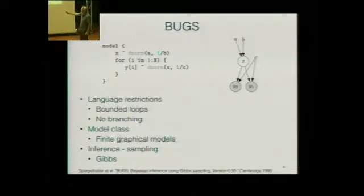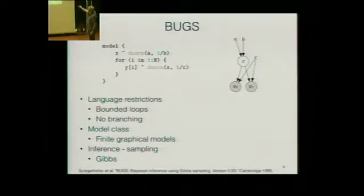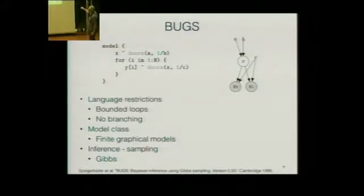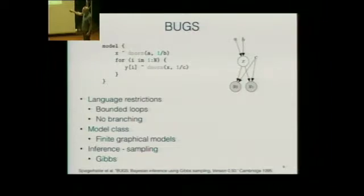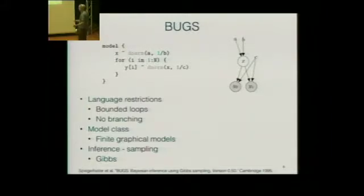You can also evaluate this program by constructing the corresponding graphical model. There's some X, some Y's that are dependent on X, and we have algorithms in machine learning and statistics to perform inference in graphs like this, provided the functions on the edges are deterministic. The evaluator for BUGS doesn't actually run the program — it constructs this graphical model and then runs Gibbs sampling. In order for a generic Gibbs kernel to be applicable, the language must be restricted: bounded loops, no branching, such that the model class is that of finite graphical models.